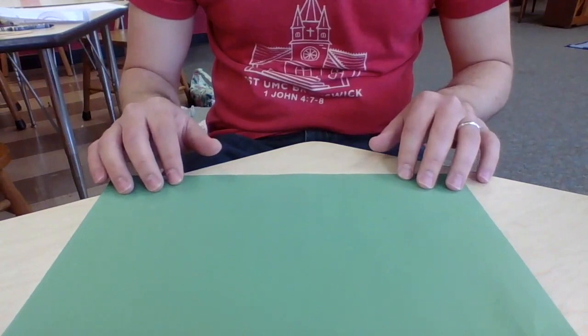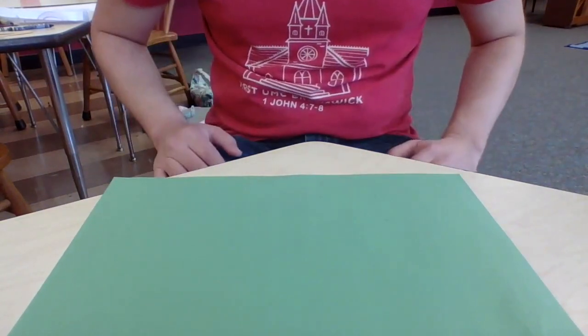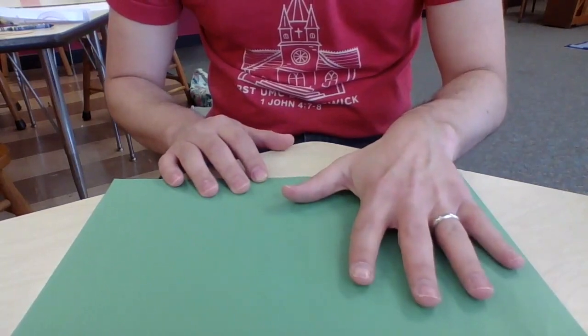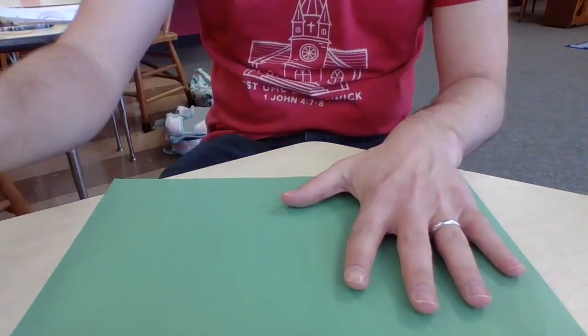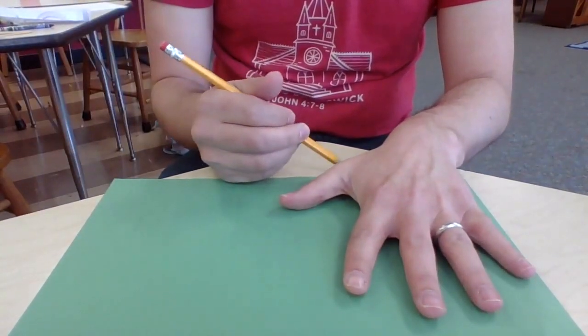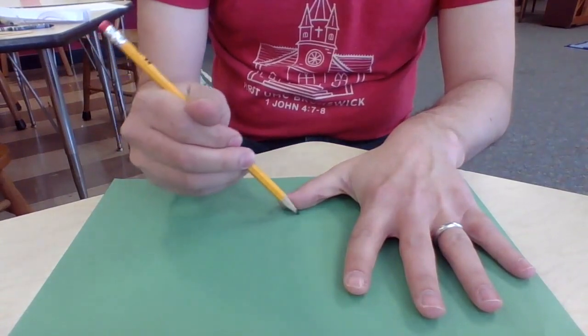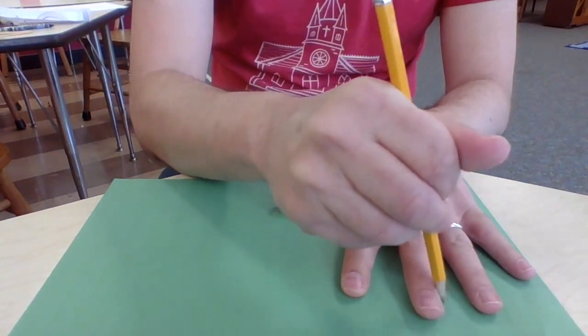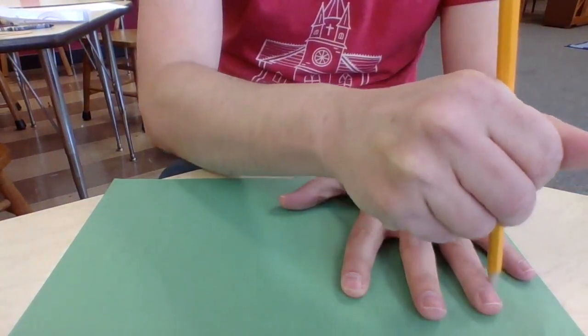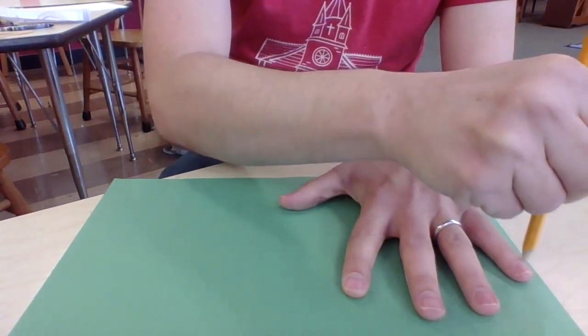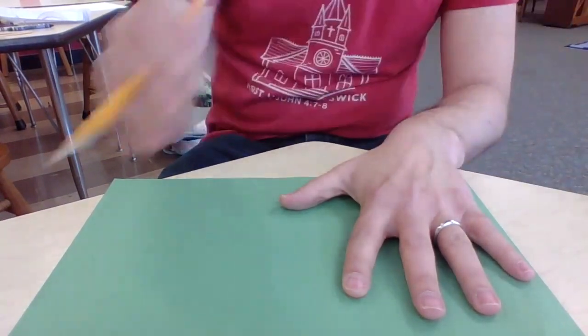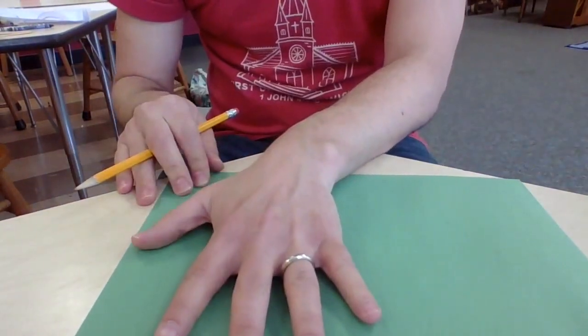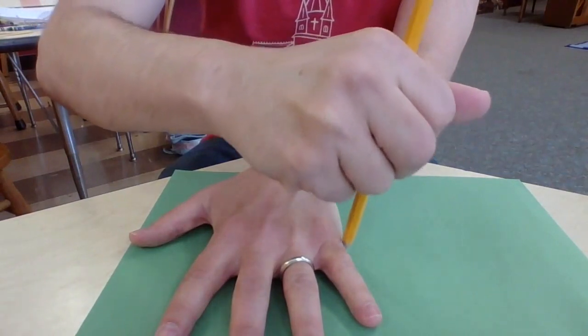First thing you're going to do is take a sheet of paper. It doesn't have to be green, but I happen to have a piece of green paper. What you're going to do is trace either your hand or your kids' hands on the sheet of paper. You can make sure you have enough room to trace both of your hands on the same sheet of paper. I just did the first one, here's the second one.